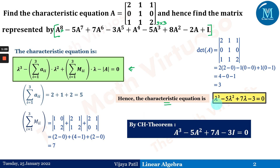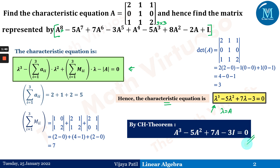By the CH theorem, we replace every λ by A in the characteristic equation, and we can write: A³ - 5A² + 7A - 3I = 0. We are going to make use of this fact from the CH theorem to find the value of the given polynomial.